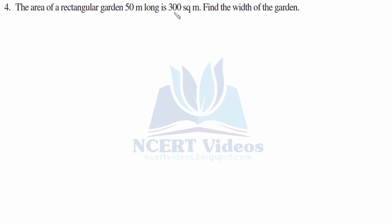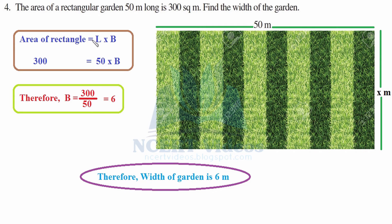Fourth question: the area of a rectangular garden 50 meter long is 300 square meter. Find the width. Length is given, area is given, we need to find breadth. Formula: area equals length into breadth. So 300 equals 50 into b. Dividing both sides by 50, the zeros cancel out and 300 divided by 50 gives 6. Therefore, width of the garden is 6 meter.